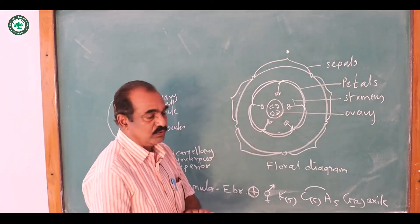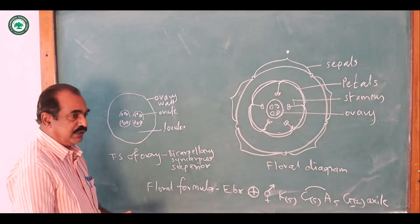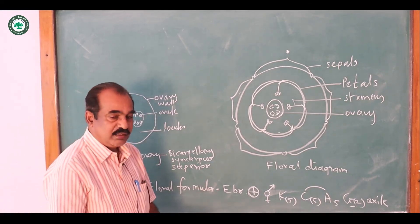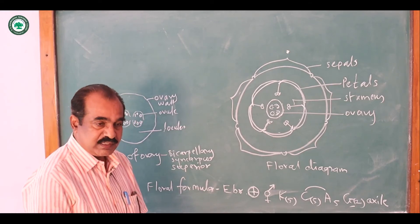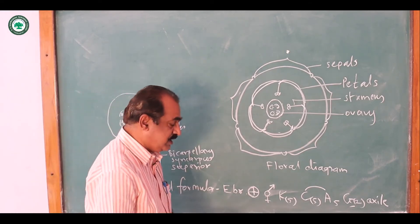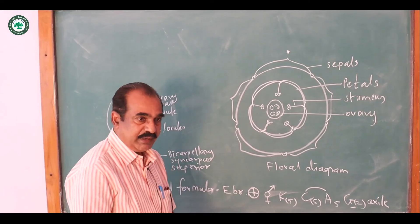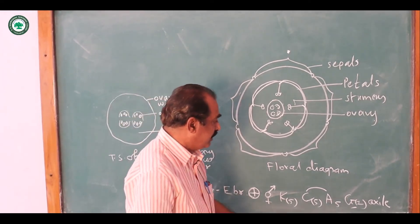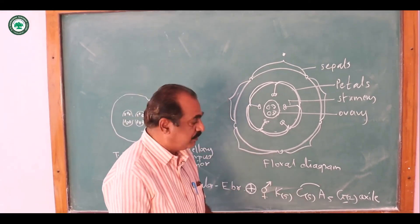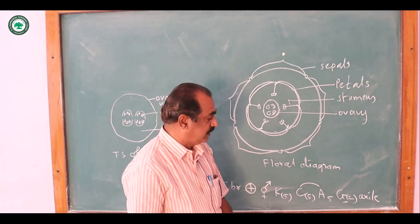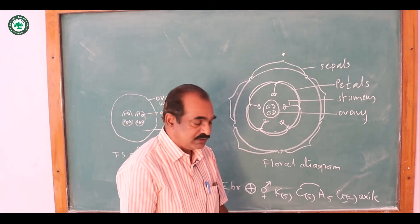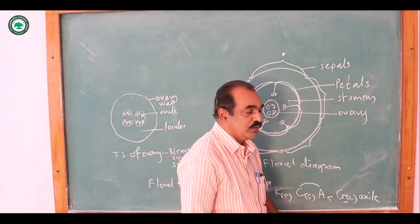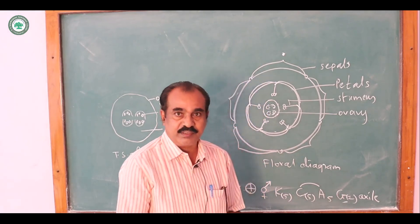Inside this there is the ovary. Now the floral diagram, it is ebracteate, complete actinomorphic, bisexual, K5 that means sepals are five in number, gamosepalous is the condition, C that is the corolla 5, gamopetalous, then androecium stamens are five in number, they are epipetalous. Then gynoecium, bicarpellary is the condition, syncarpous is the condition and superior ovary axial placentation is there. Thank you.